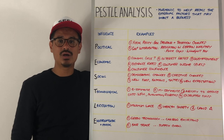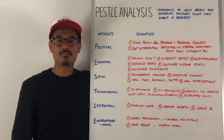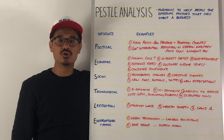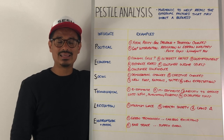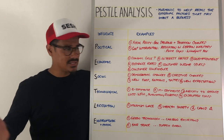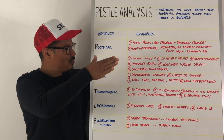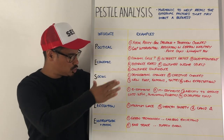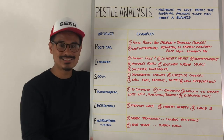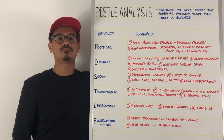Let's have a session on PESTEL analysis. PESTEL analysis is simply a mnemonic to help you recall the likely external factors that will impact a business. PESTEL stands for political, economic, social, technological, legislation, and environmental and/or ethical.